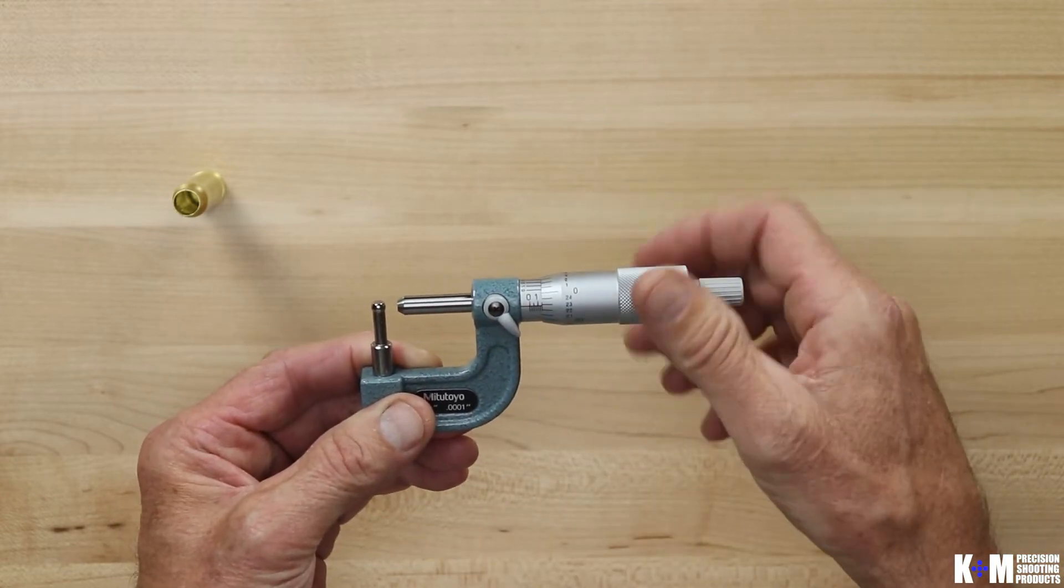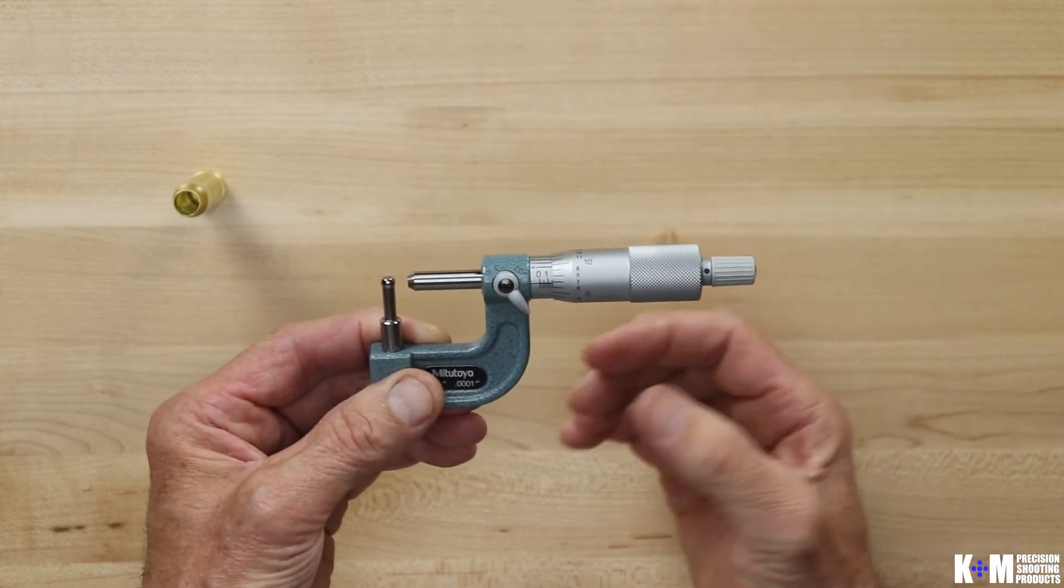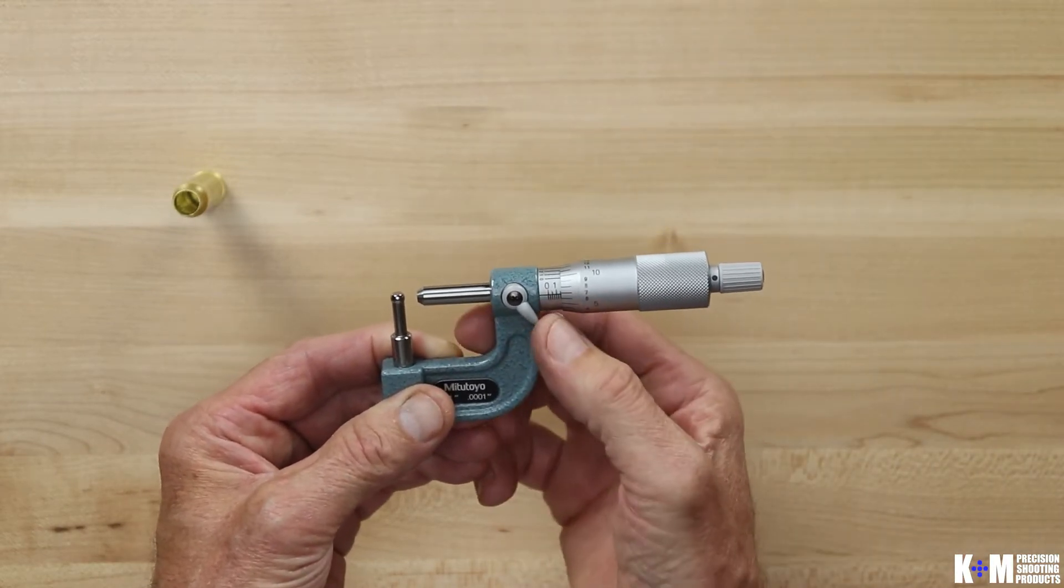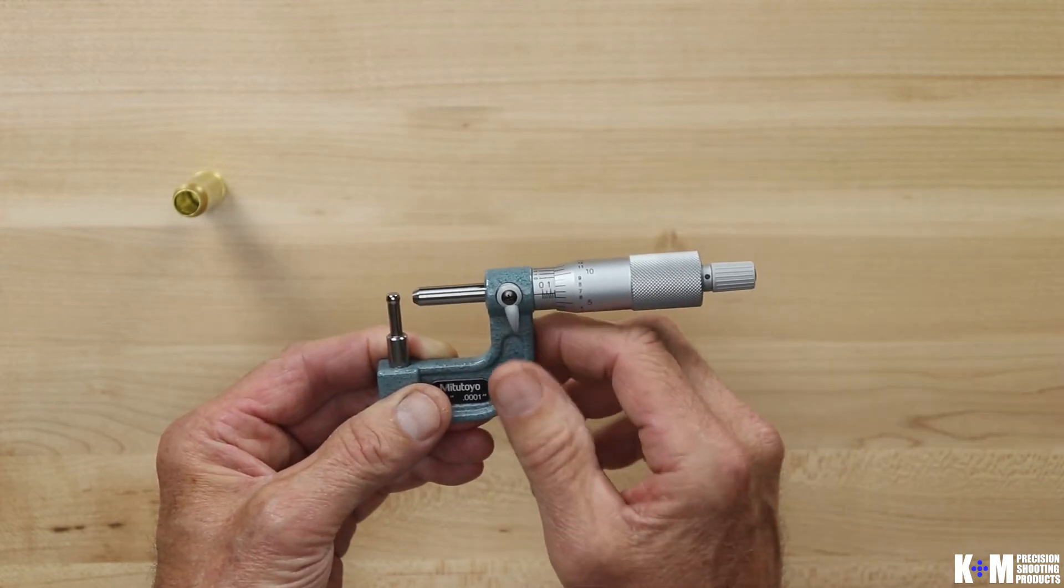This part back in here that the spindle goes over, the thimble goes over top of is the sleeve and there's division markings on that and then sometimes you'll have a spindle lock so that you can't rotate it.